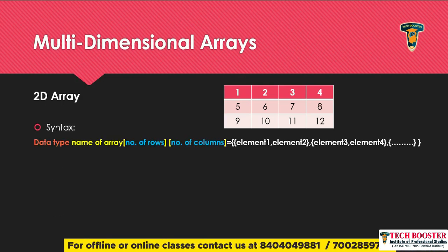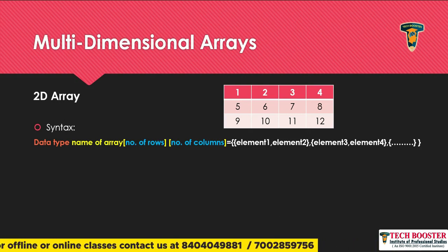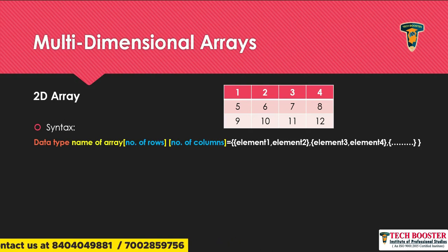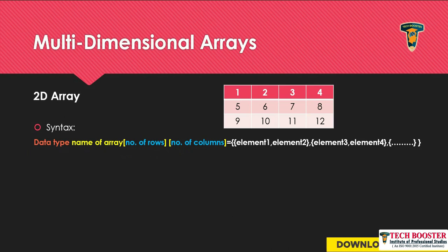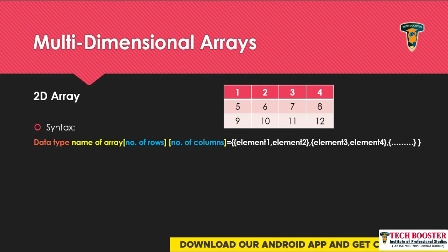Before creating the 2D array, we need to know the syntax. First we consider the data type, then the name of the array, then the number of rows in square brackets, and then another square bracket with the number of columns. The data type is very important — if you consider the data type as int, your array will only be able to store integer values.